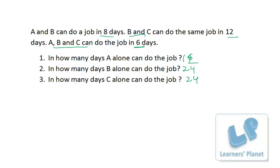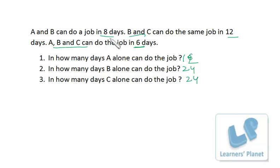One more question can be asked: A and B is given, B and C is given — what about A and C? Since B and C have equal capacity, whatever number of days A and B take, the same number of days will be taken by A and C. So A and C will also take 8 days to complete the work when working together.